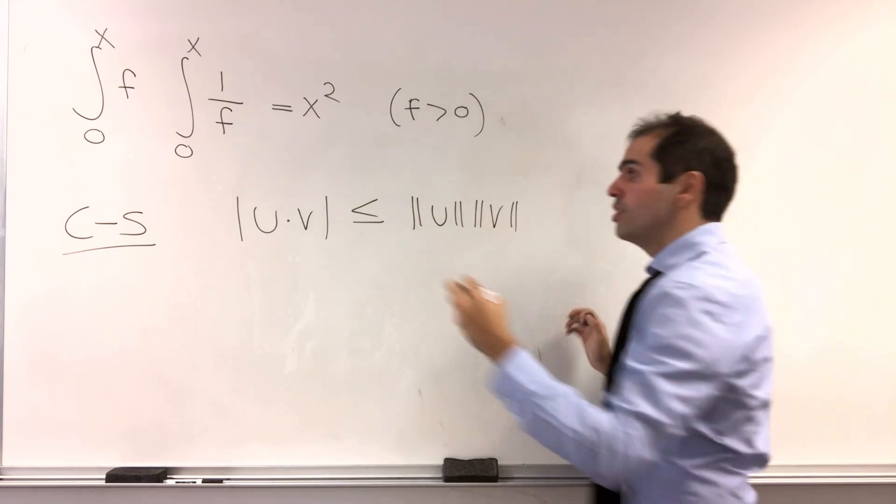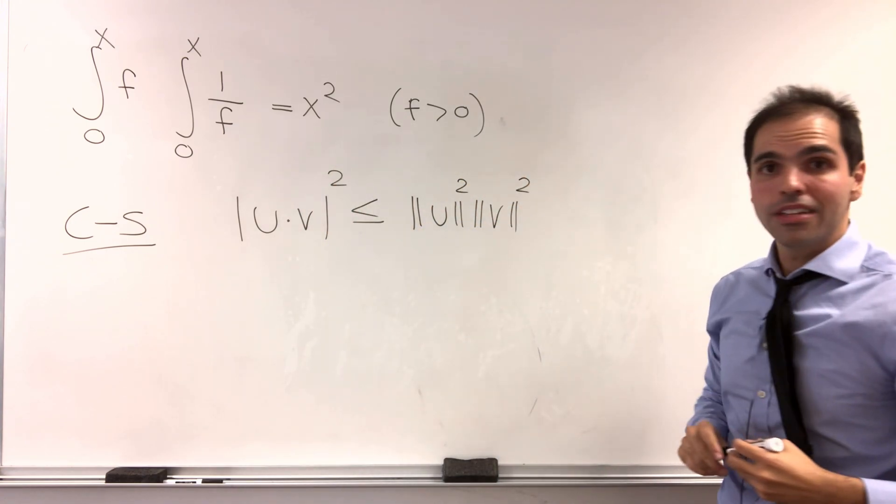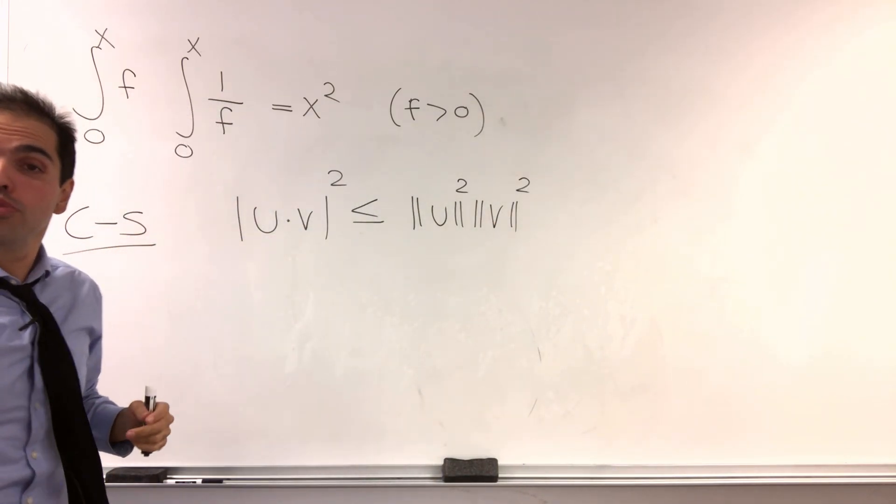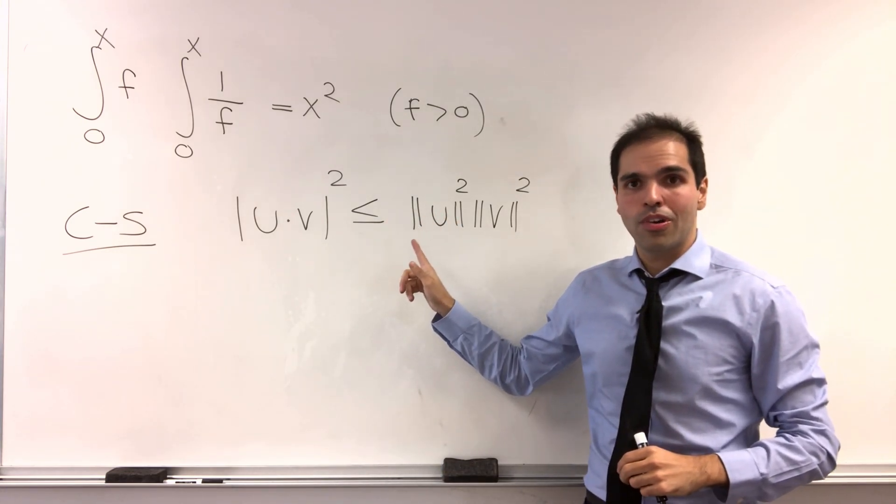Or, if you wish, the absolute value squared is less than or equal to the length of u squared times the length of v squared. Now, this is the thing that's usually taught to undergrads, but remember, it says something even stronger.